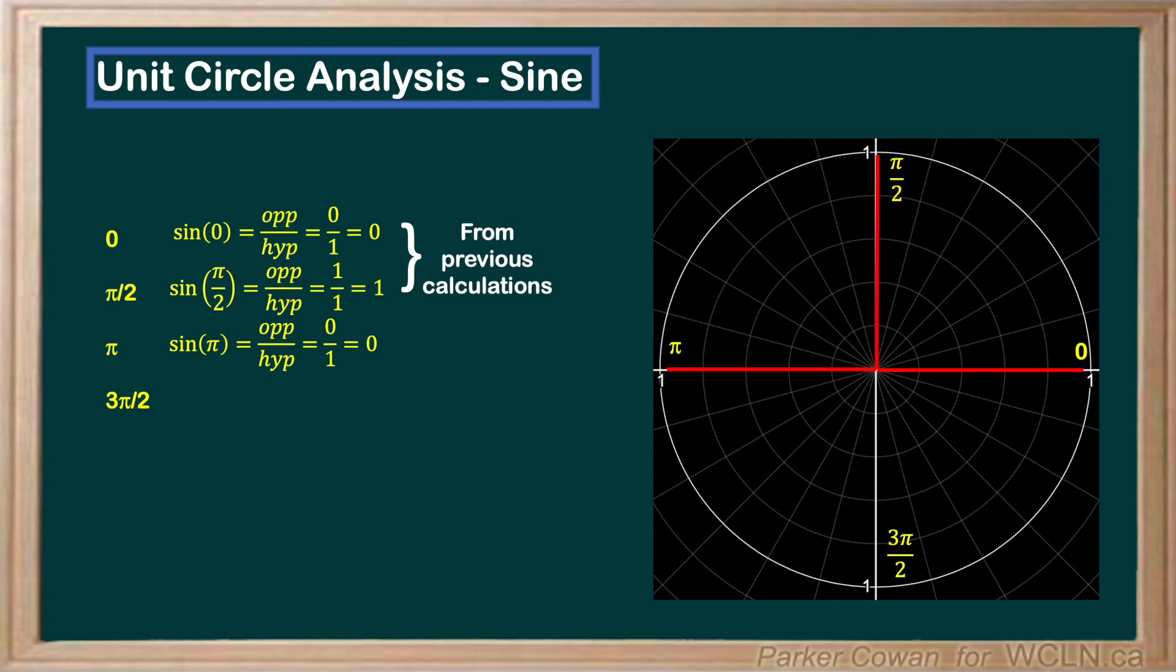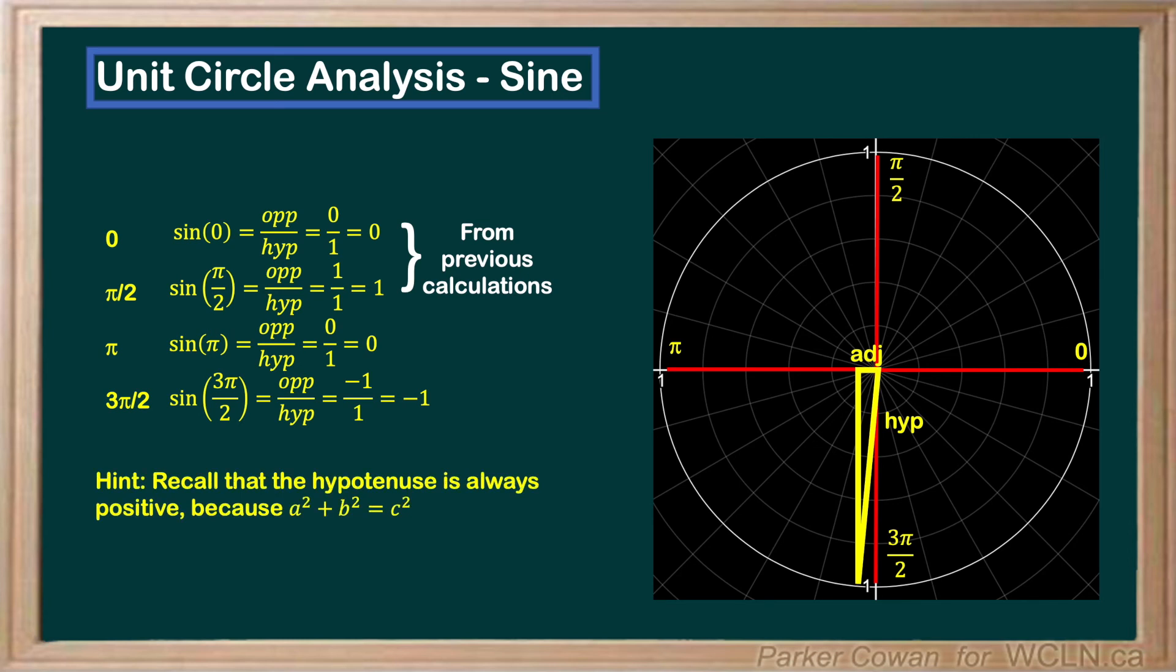For sine 3 pi over 2, our squished triangle gives us an opposite side length equal to the hypotenuse, just like for pi over 2. An important thing to note here is that our hypotenuse is always positive, because our hypotenuse is found through the formula a squared plus b squared equals c squared, where the square takes away the negative sign.